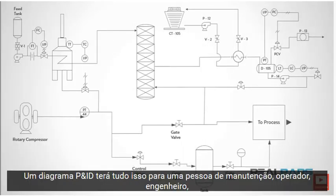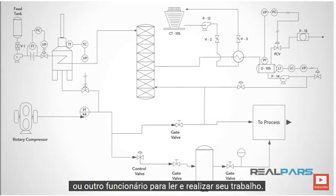A P&ID diagram will have all of these components for a maintenance person, operator, engineer, or other employee to read and perform their job.